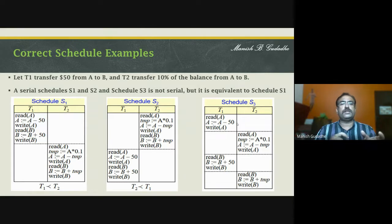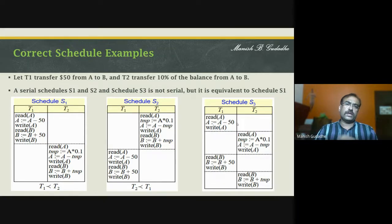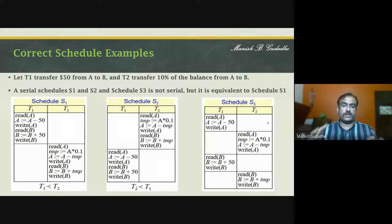A serial schedule means you first execute one transaction completely and then execute the other transaction. But what you can find is that S1 and S3 are equivalent to each other — they are producing the same result. Even if we execute S3, we are going to get the same intended result even though it is not a serial schedule.